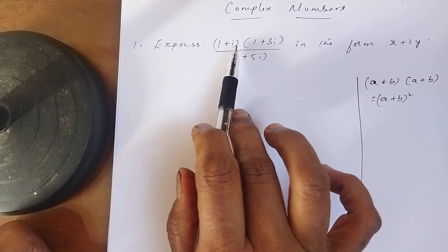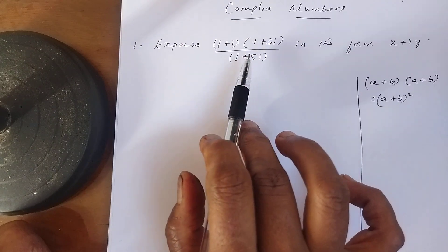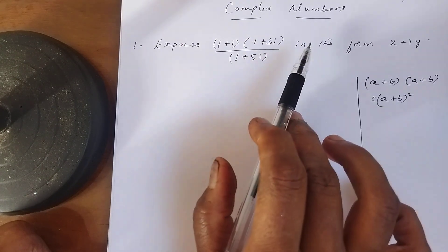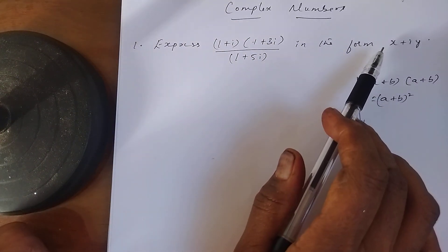Express (1+i)(1+3i) divided by (1+5i) in the form x+iy.